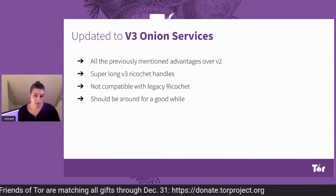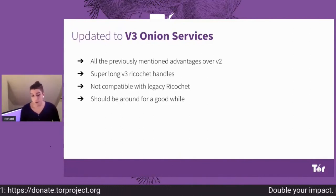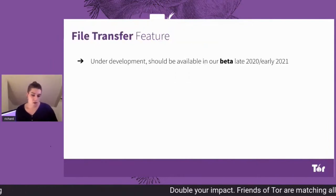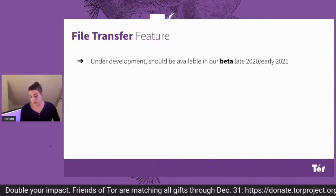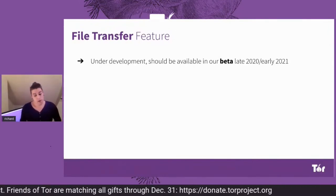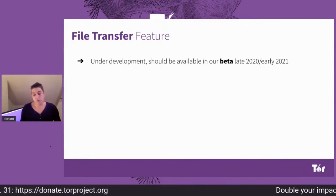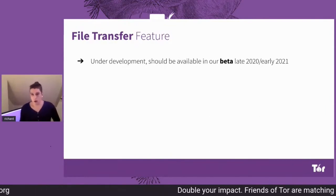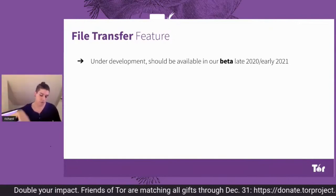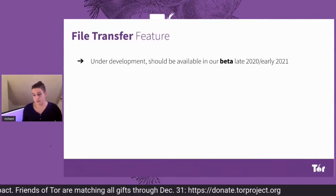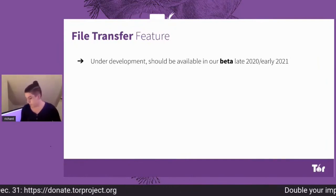As we're using V3, it should be around for quite a long while, at least until V3 gets deprecated — hopefully without problems. Speaking of feature set, we'll be adding a file transfer feature, coming in the next beta build either in December 2020 or January 2021. You should be able to talk to one of your contacts and initiate a file transfer to send documents, cat pictures, or whatever it is people send over a messenger.